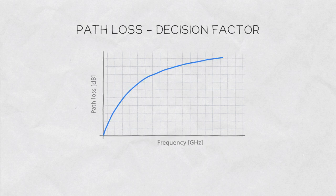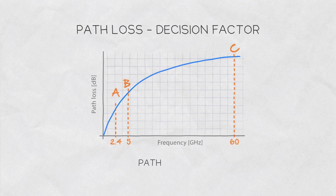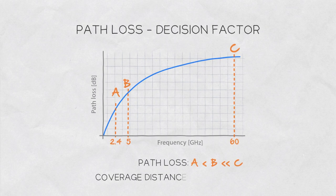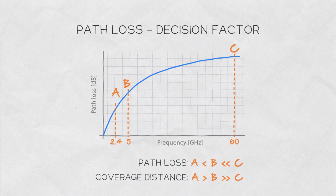Path loss should definitely be considered while deciding which part of the spectrum to use, but the decision goes well beyond simple physics of achievable distance.